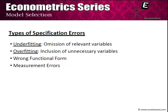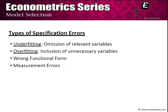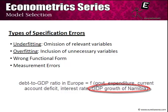There are basically four types of specification errors we will be covering. Firstly, underfitting — that is, omission of a relevant variable. For example, if we talk about investment in a particular country and we ignore the central bank rate, then we are committing an error of underfitting. Similarly, there is an error of overfitting — that is, inclusion of unnecessary variables. For example, while talking about the evolution of debt in the eurozone countries, if you include the GDP growth rate of Namibia, that is inclusion of unnecessary variables, which is called overfitting.